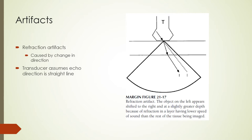Refraction artifacts are caused by changes in ultrasound direction as it travels across tissue boundaries. An object appears to originate from a different path of the anatomy due to refraction, because the ultrasound processing software assumes the returning echo is coming from a straight-line path and calculates the distance accordingly.